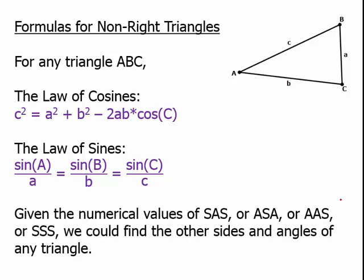Given the numerical values in a combination SAS, that is to say side, side, and an included angle. Or ASA, angle, angle, and an included side. Or AAS, two angles and a non-included side. Or just all three sides, SSS. Now notice those are the four combinations that determine a triangle. They are good enough for triangle congruence. So if we're given numerical values in any of those combinations, we could find all the other angles and sides of the triangle.